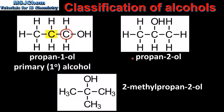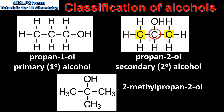Next we look at propan-2-ol. We need to count the number of carbon atoms that are directly bonded to the carbon atom that is bonded to the hydroxyl group. As we can see there are two carbon atoms directly bonded to this carbon atom. Therefore propan-2-ol is a secondary alcohol.